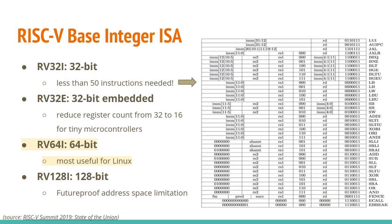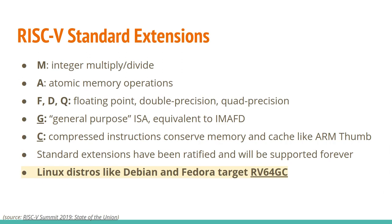Sometimes when I give this talk I go a lot into the basics of RISC-V, but since this is already a RISC-V meetup, I'm only going to focus on the parts that are important for Linux. With RISC-V, we have four base integer ISAs. RV64 is the 64-bit one, and this is going to be most interesting for Linux. We also have standard extensions, and for Linux distros like Debian and Fedora, they're targeting RV64GC.